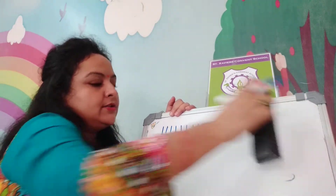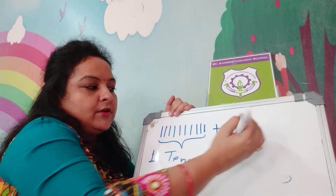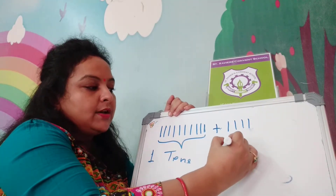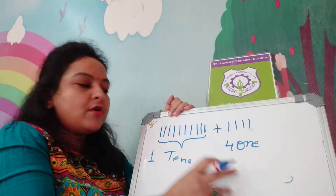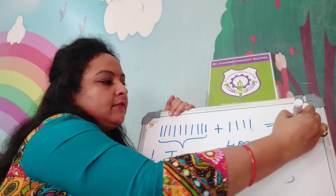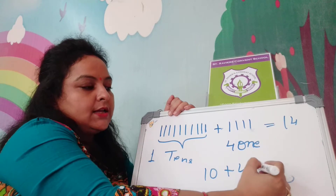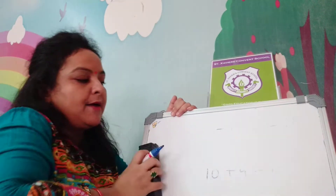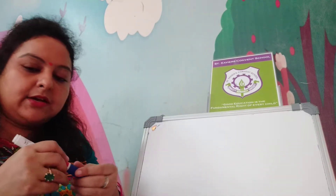Now if we add 4 ones — 1, 2, 3, 4 — here are 4 sticks, we will call it 4 ones. So when we add 4 ones to 1 ten, it will make 14, because 1 ten is 10 plus 4 ones is 4, is equal to 14. And so on. This is the way you can add 10s and 1s.